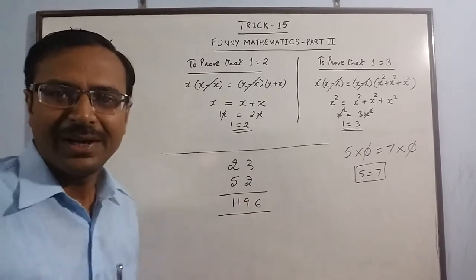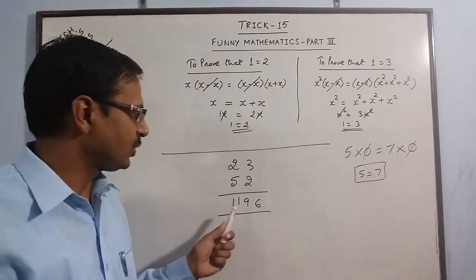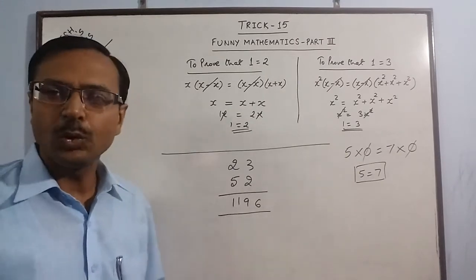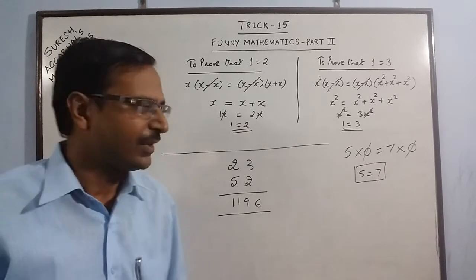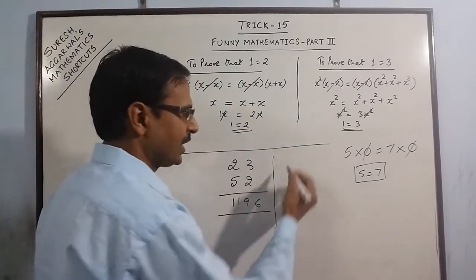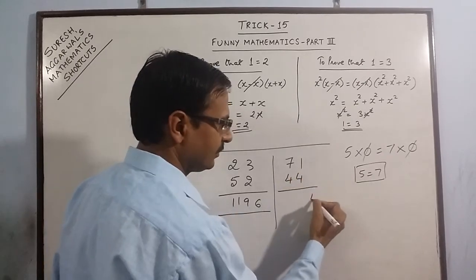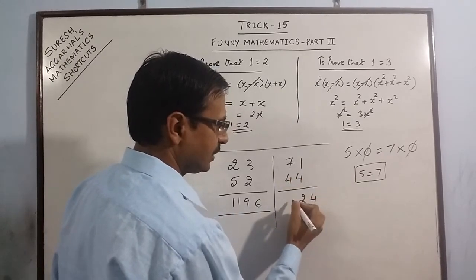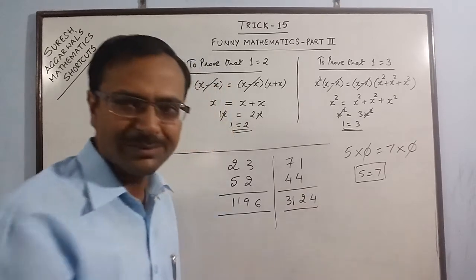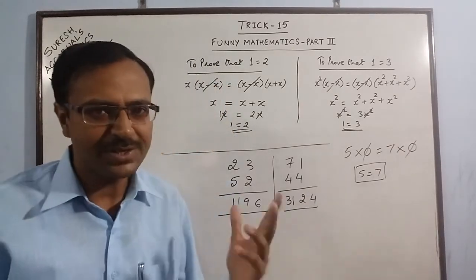That's all. It takes 2 seconds to multiply 2 digit number by a 2 digit number. Another example, say I have 71 and 44. See, that's all. So 2 seconds, 3 seconds.